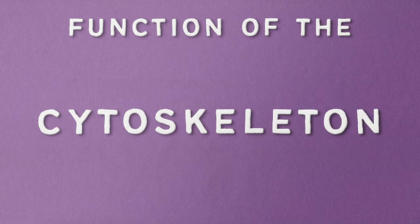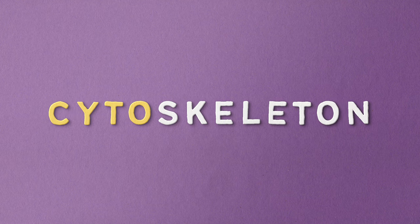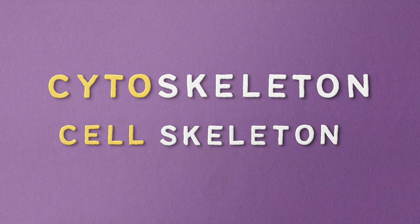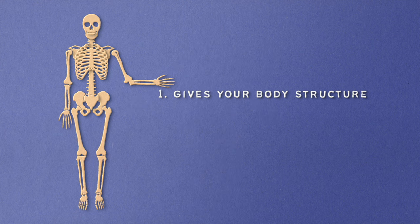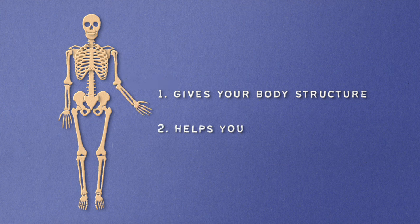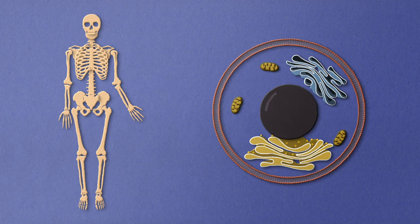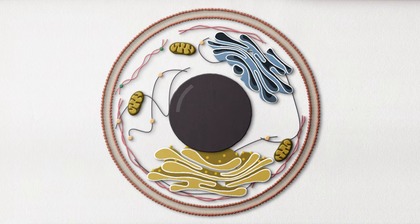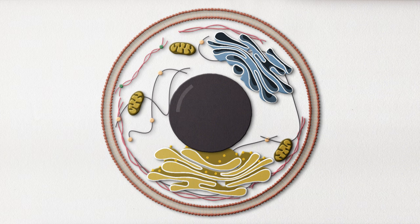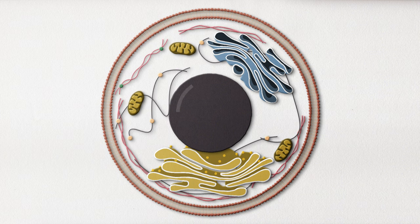Before we get into the function of the cytoskeleton, let's talk about what's in a name. Cytoskeleton literally translates to cell skeleton. And what does a skeleton do? It gives your body structure, and with the help of some other organs and tissues, helps you move about. The cytoskeleton has essentially the same job, as it gives your cells structure and allows for mobility. The cytoskeleton also helps keep the organelles in their proper places, acting as the backbone — literally and figuratively — for the cell.